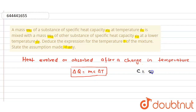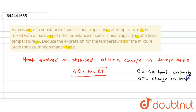Here, C is the specific heat capacity, delta T is the change in temperature, and delta Q is the heat. Now, in this question, if the vessel is isolated then the total change in energy must be zero. So the total energy change, delta Q, equals zero.